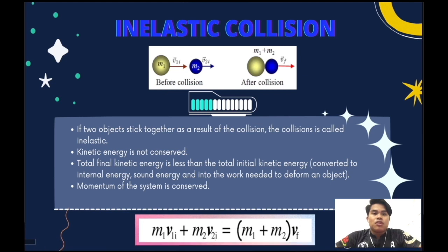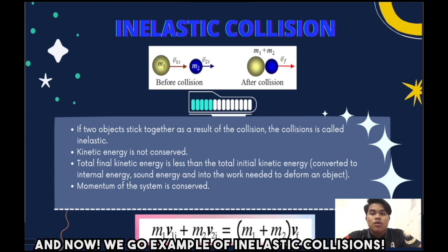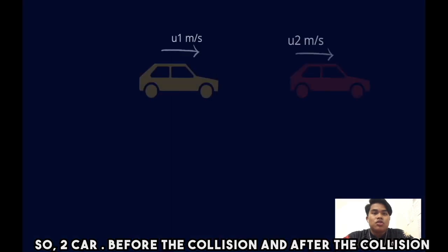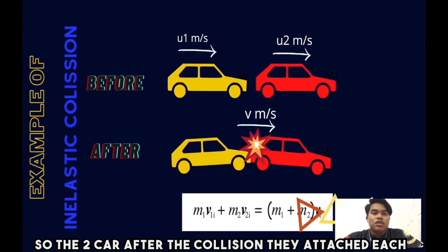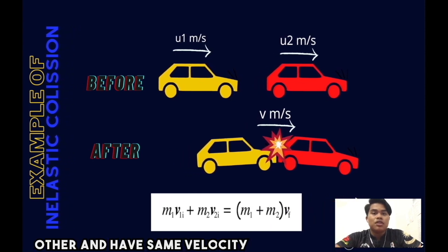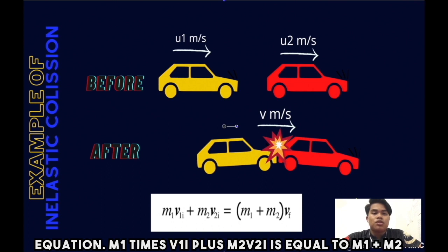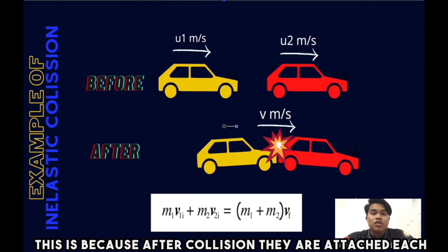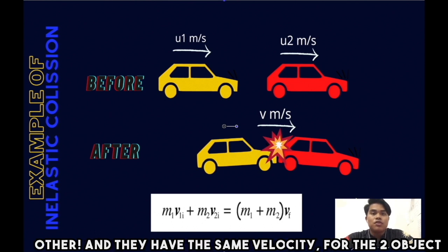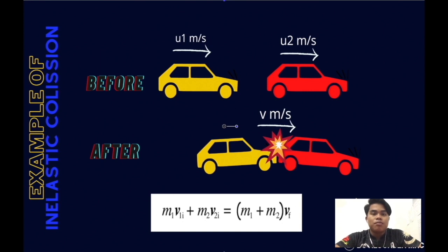As you can see from the diagram, before the collision: M1 times V1i plus M2 times V2i equals, after the collision, M1 plus M2 times V — since both objects have the same final velocity and are attached to each other. The example is two cars: after the collision, they are attached to each other and have the same velocity. That is why the formula is M1 plus M2 times V.